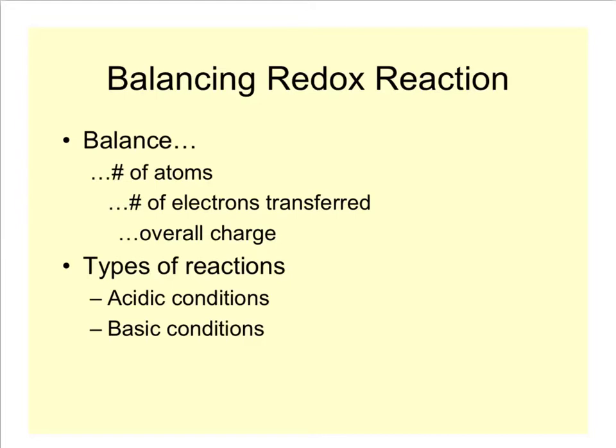So to balance a redox reaction, like balancing every other kind of reaction in the world, the number of atoms on either side of the reaction arrow have to balance. But since we're talking about a redox reaction, what also has to balance is the number of electrons. If you have four moles of electrons coming out of the oxidation, you must have four moles of electrons going into the reduction.